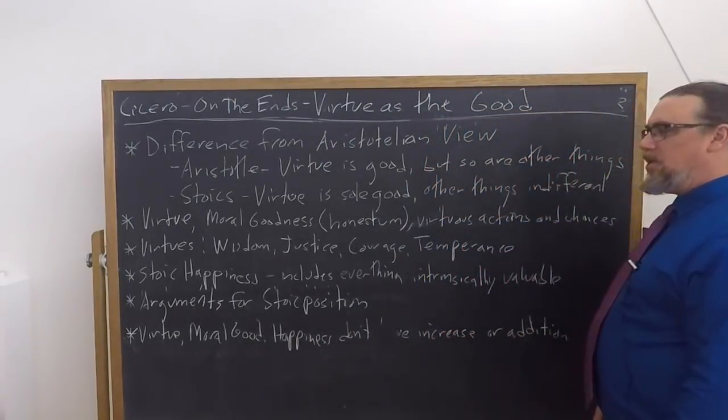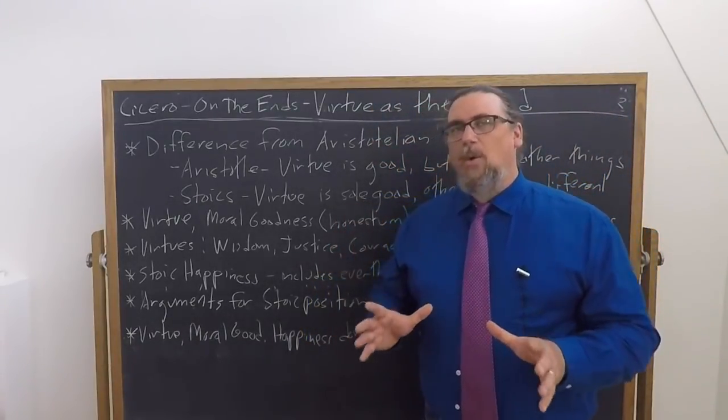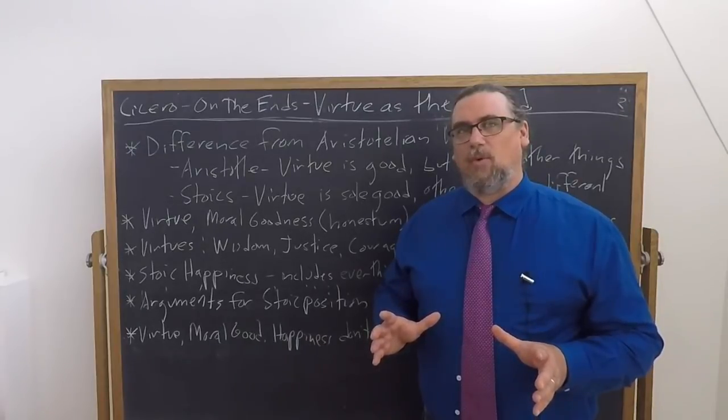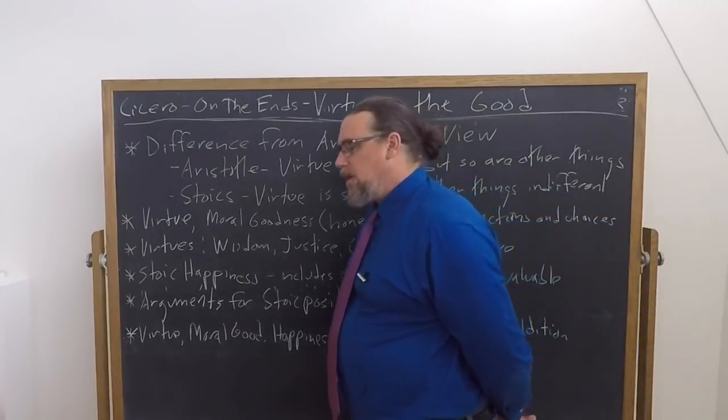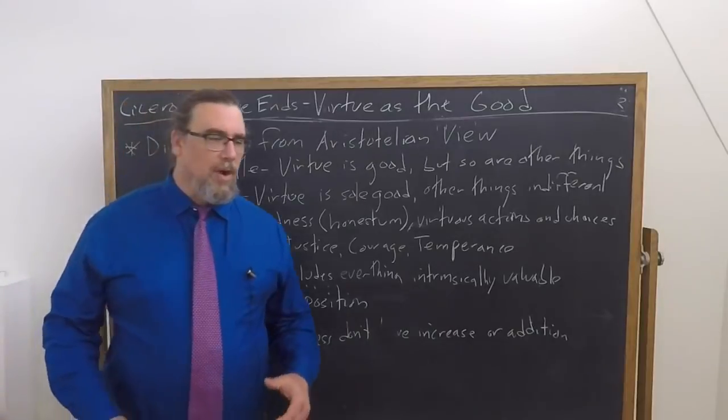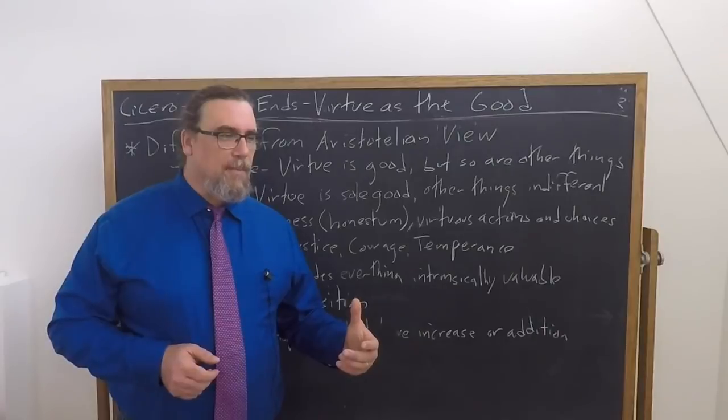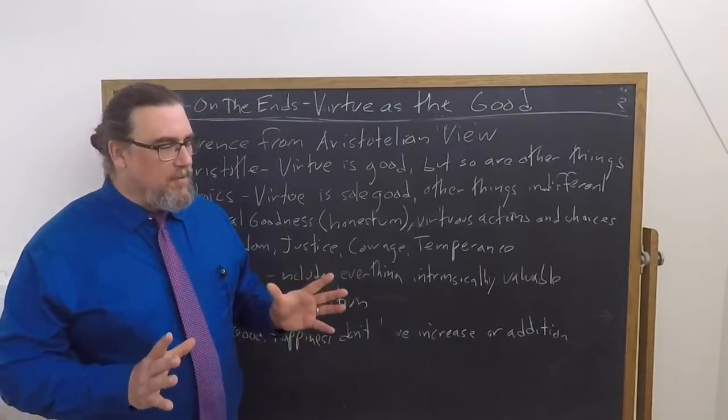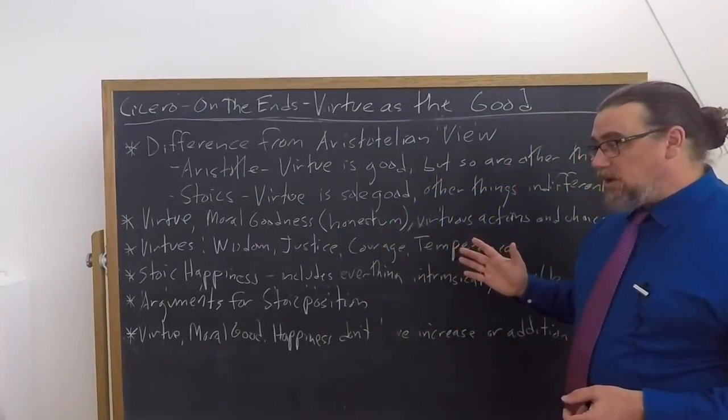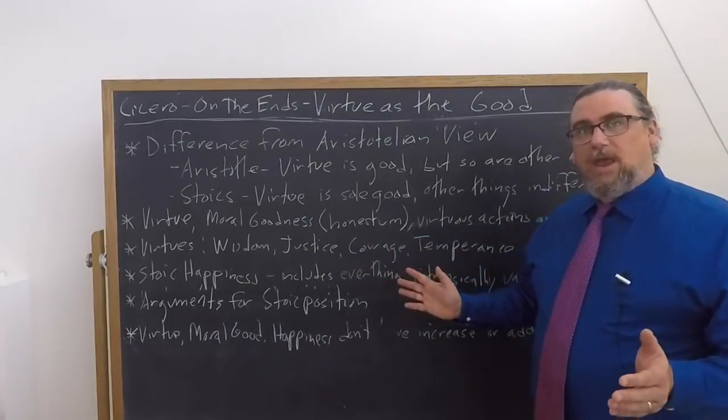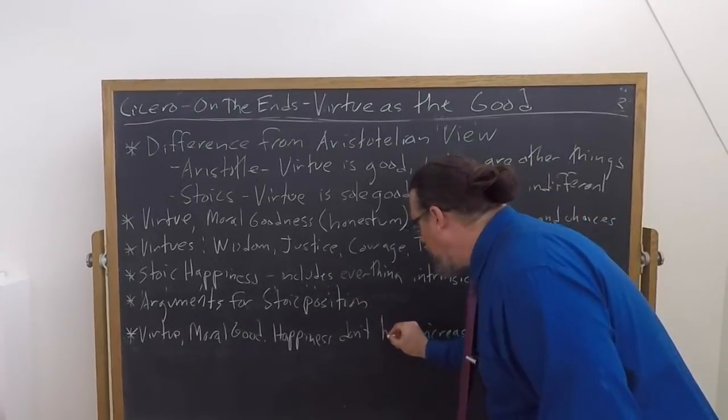The last thing that he says that I think is particularly interesting and worth keeping in mind, the Stoics adopted a position on virtue and the moral good that they fully understood was paradoxical. What does it mean to be paradoxical? It means that people are going to find this very counterintuitive and have a hard time buying into it. The argument, and they provided actually a number of analogies and arguments to support this, is leading to the conclusion that virtue, the moral good, happiness, these things do not have increase or decrease.